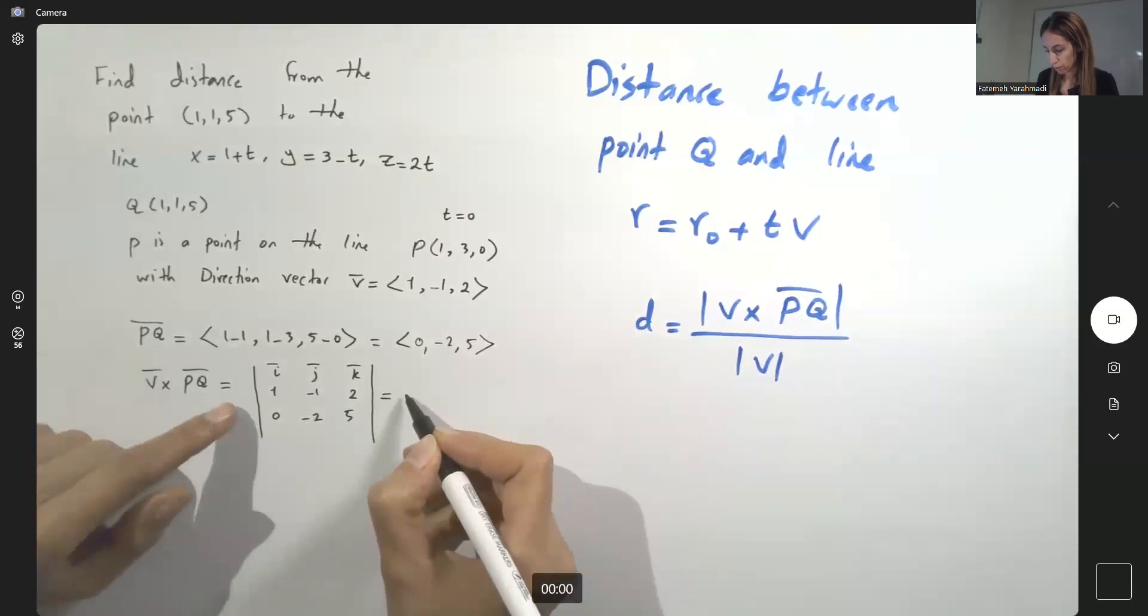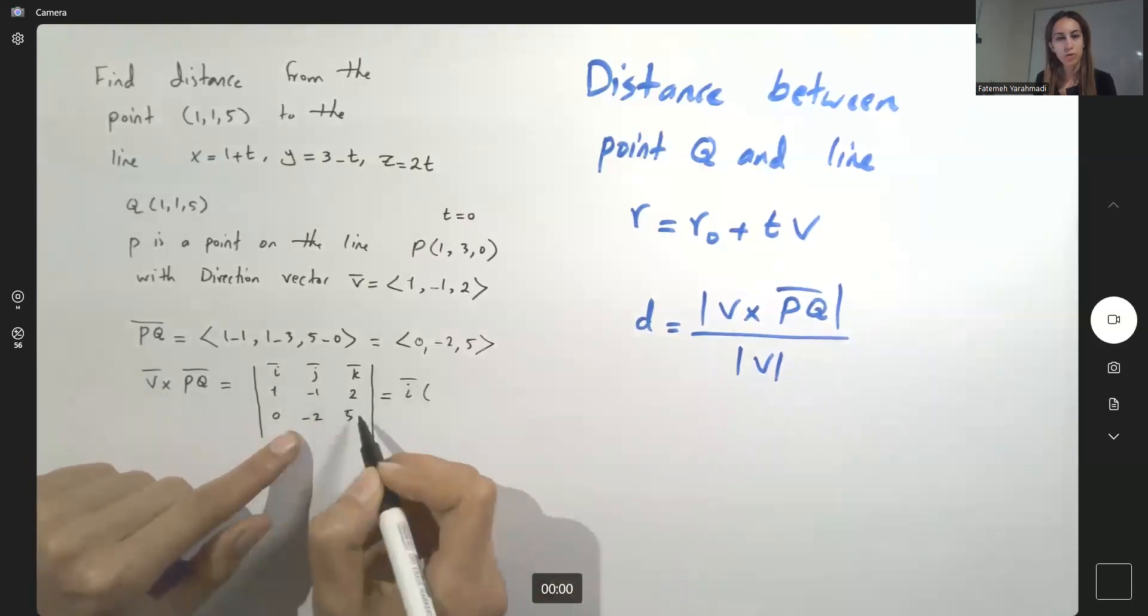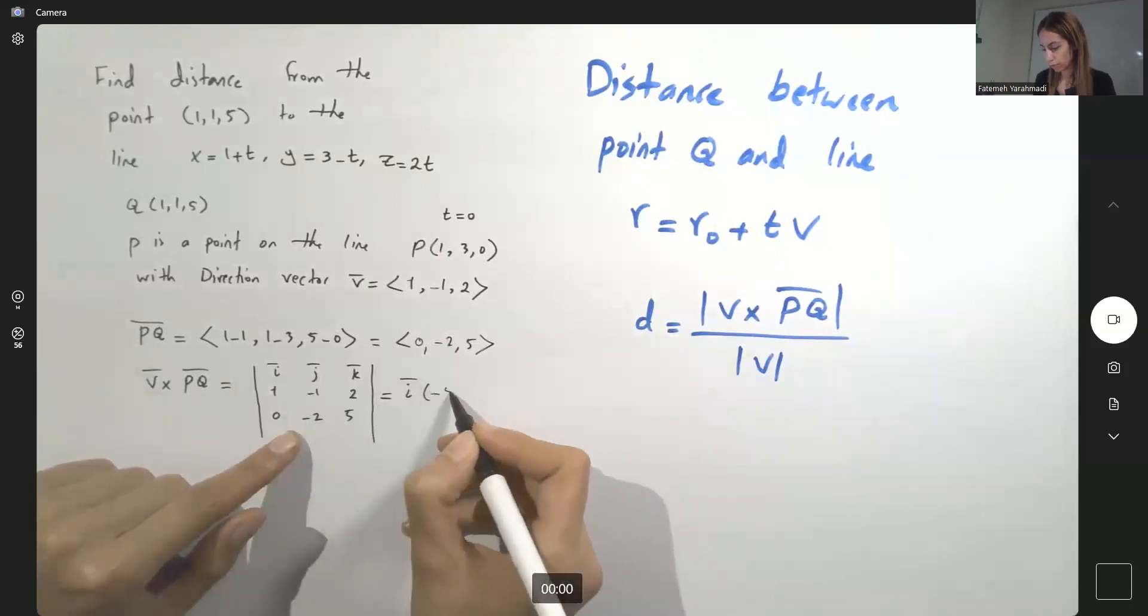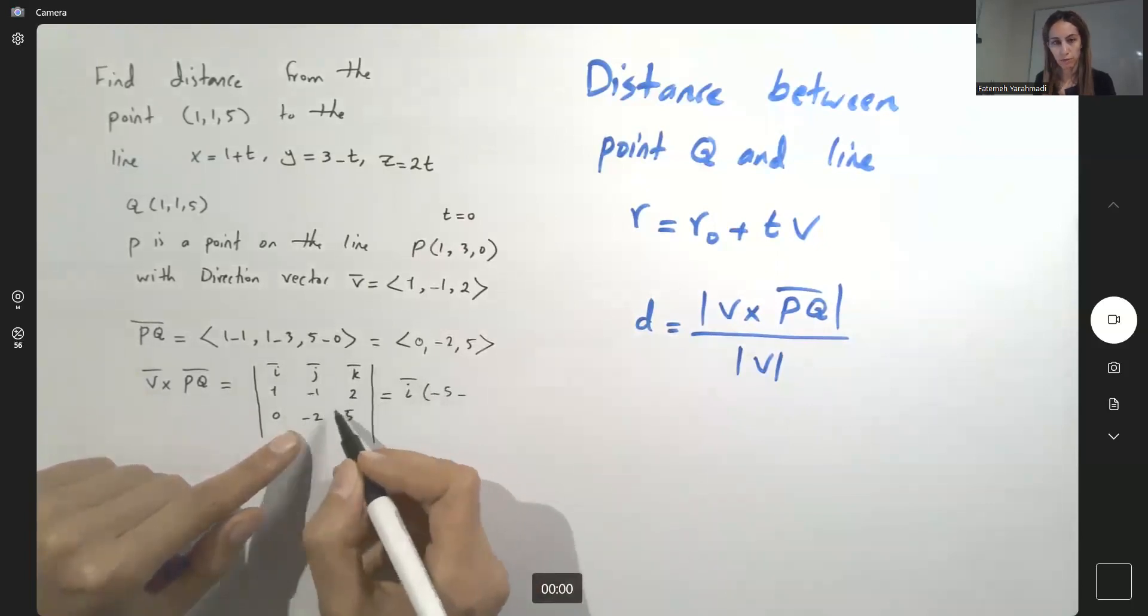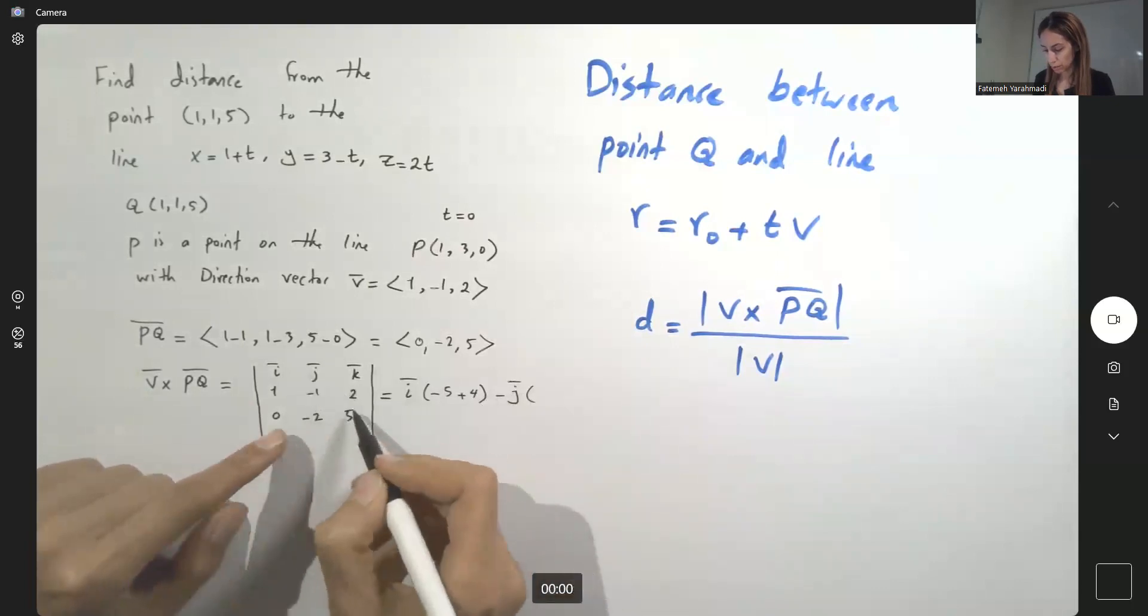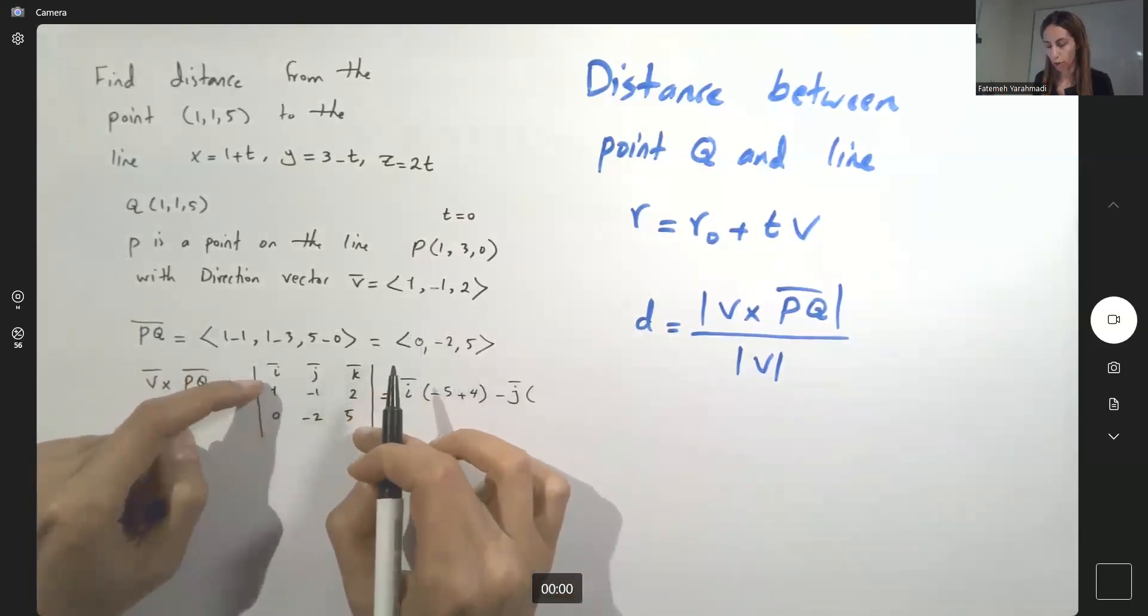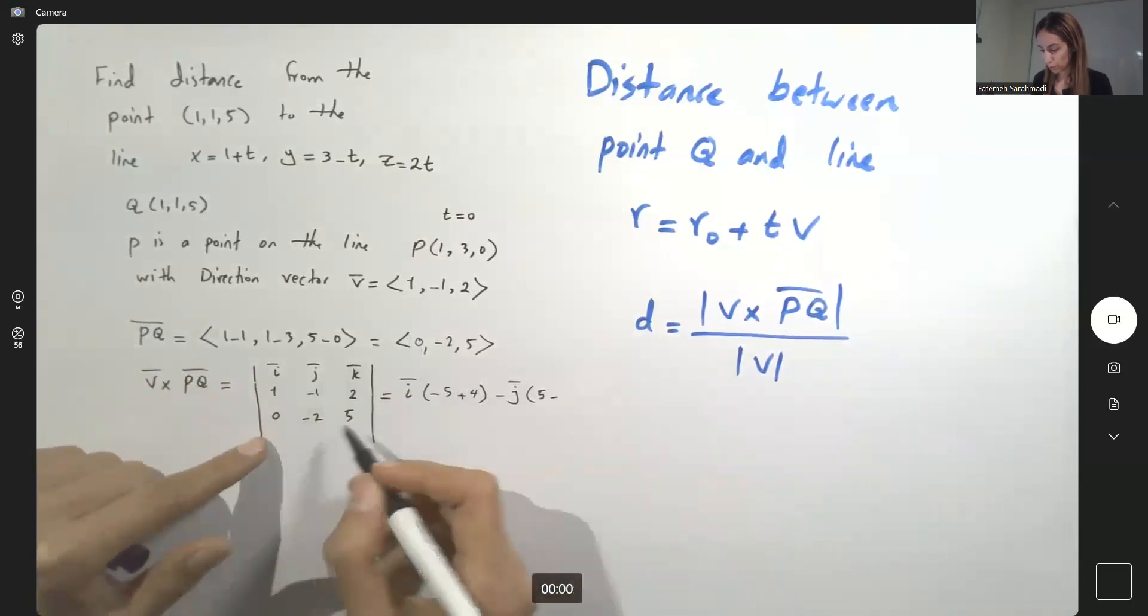This is equal to I multiplied by the determinant of this 2 by 2 matrix: negative 1 times 5, negative 5, minus negative 2 times 2, negative 4. So we get plus 4. Minus J times the determinant of this 2 by 2 matrix: 1 times 5, 5, minus 2 times 0, 0.